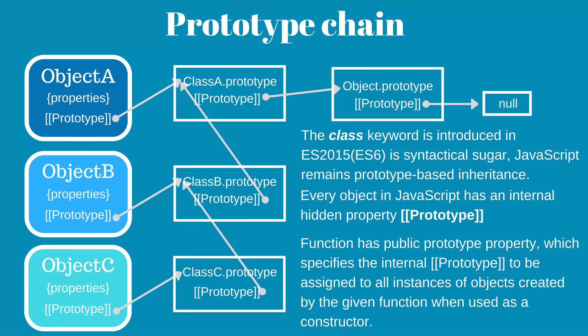Almost all objects in JavaScript have Object.prototype at the top of their prototype chain. As object B is an instance of class B, its internal prototype is a reference to class B's public prototype property, which is an object whose internal prototype is a reference to class A's public prototype property, since class B extends class A. Then the prototype chain goes the same way as it does in class A's prototype.